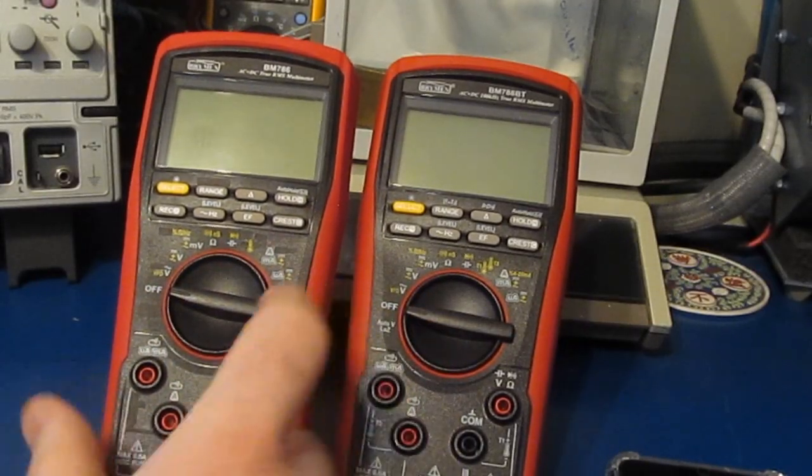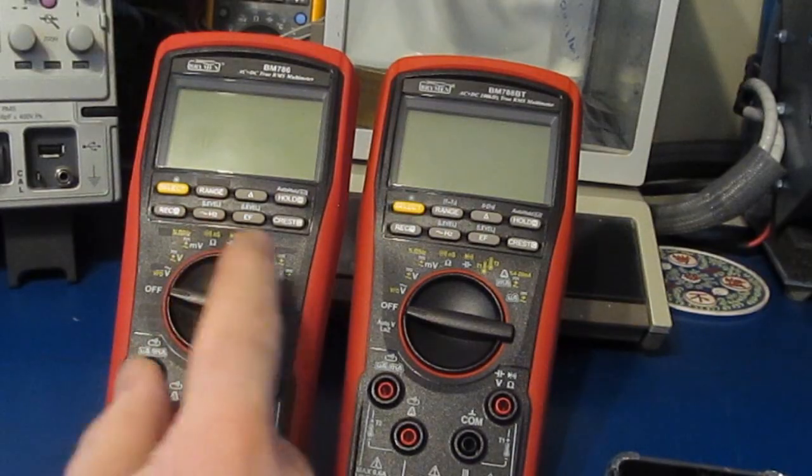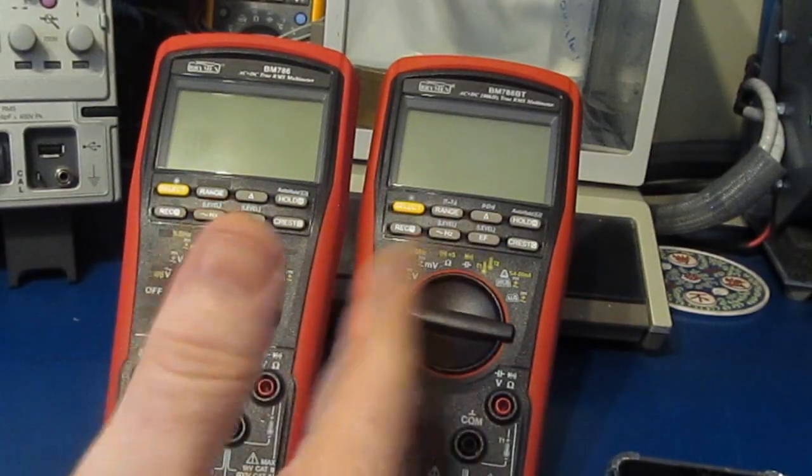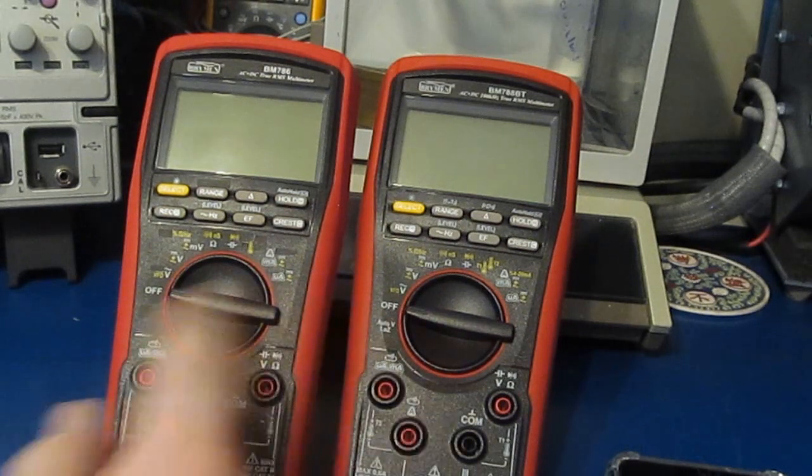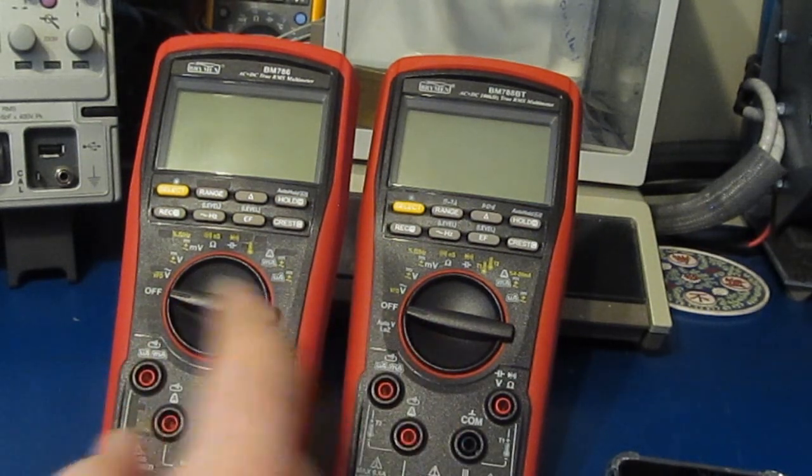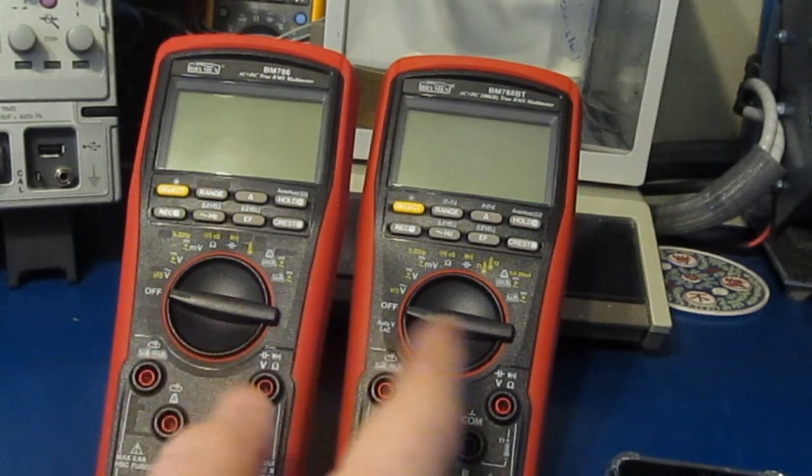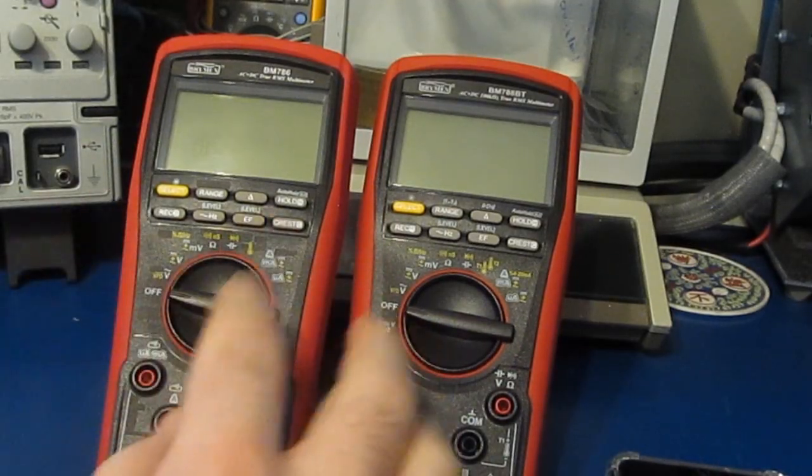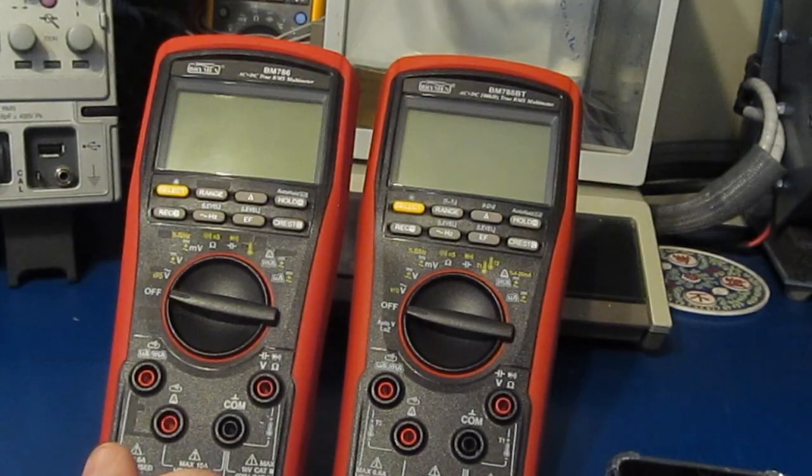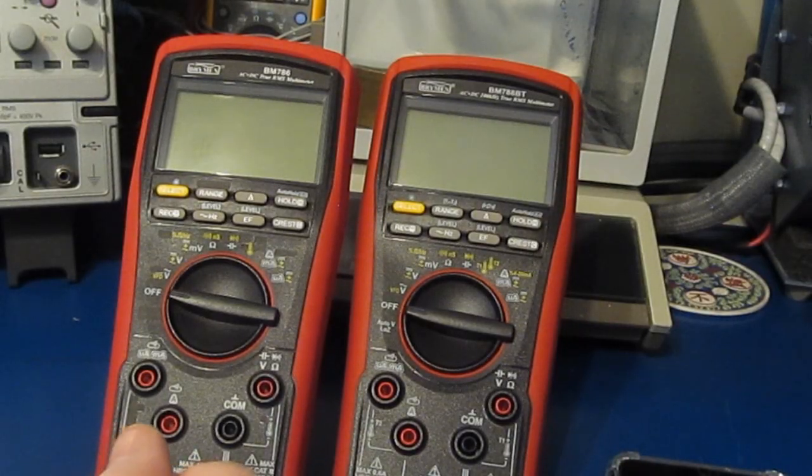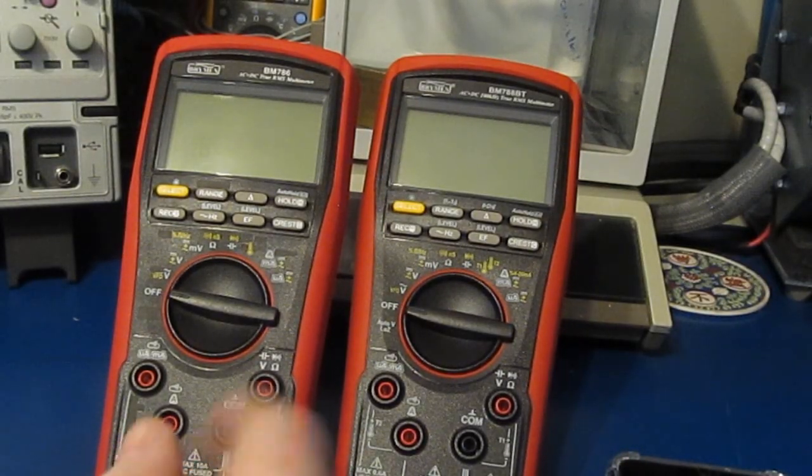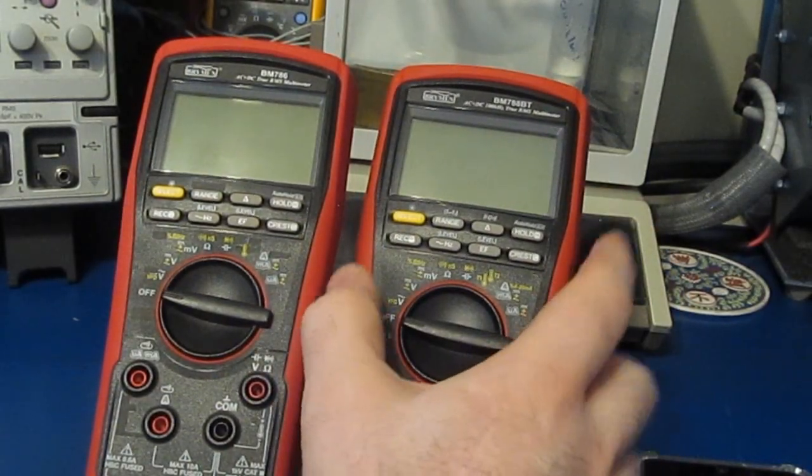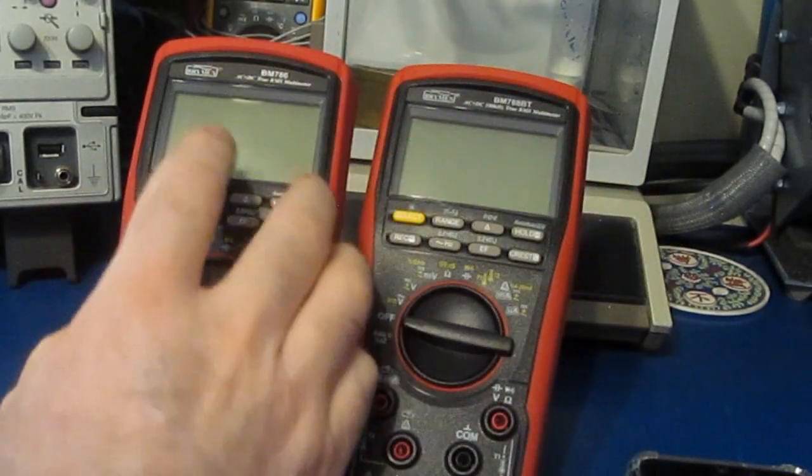When I first received these meters, Brymen had supplied me with a kind of a cheat sheet on how to go through and realign them. It was not an extensive document. So I attempted to do the realignment and I ran into a problem right away. Basically what ends up happening is I make the meter worse than what it was originally. So what I thought is I'm just going to take the coefficients out of the BM 788 and install those into this meter.